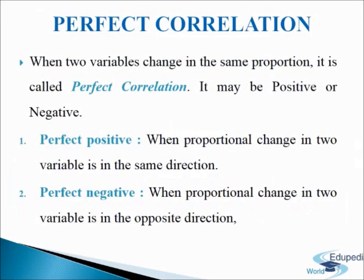Perfect correlation: if the relationship between two variables is such that the values of the two variables change — increase or decrease — in the same proportion, correlation between them is said to be perfect. When two variables change, increase or decrease in the same proportion, it is called perfect correlation.